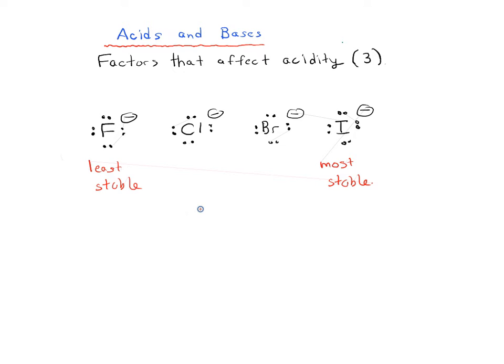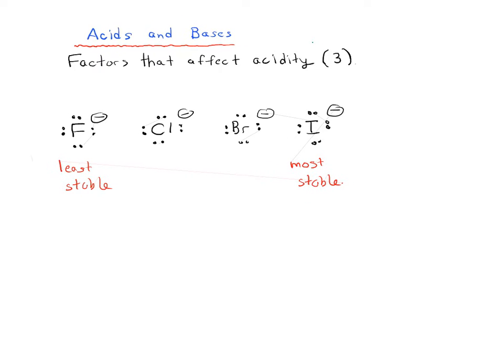Like I said, this might initially be a counterintuitive result. You might expect that the more electronegative element might be more stable. It's actually not the case. Well, why might this be?